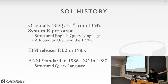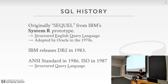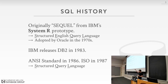Ted Codd was a mathematician who devised the relational algebra and relational model, but he didn't actually define the programming language you would use to write queries on it. You can't write queries using relational algebra. He did later define his own query language called Alpha, but that was in the 1970s. Back then, people had to come up with their own language.